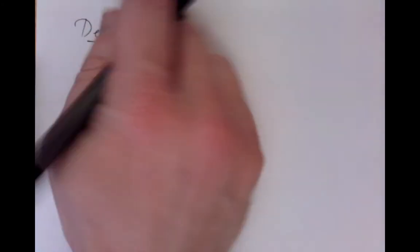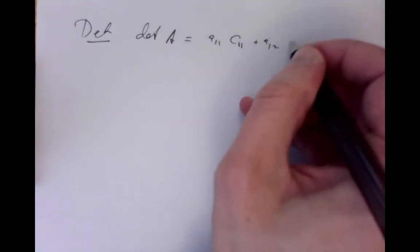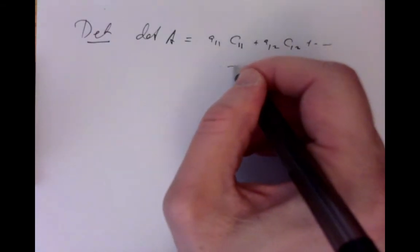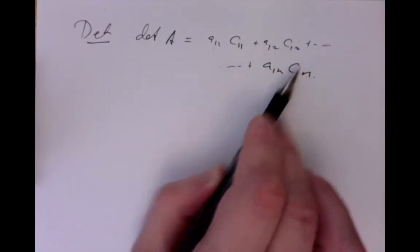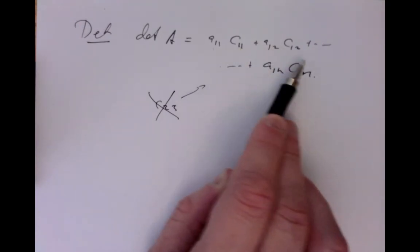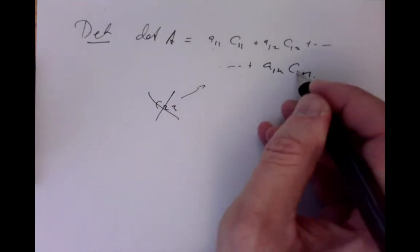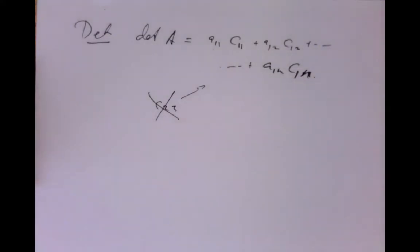Assuming we know how to calculate determinants of smaller matrices, we define the determinant of matrix A as: A_{11}·C_{11} + A_{12}·C_{12} + ... + A_{1N}·C_{1N}. Note that it's always a 1 in the first index of each entry and cofactor — C_{23} never shows up here. So these are only entries from the first row of A and cofactors with a 1 in the first entry.